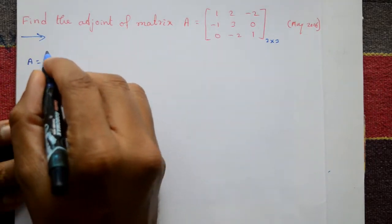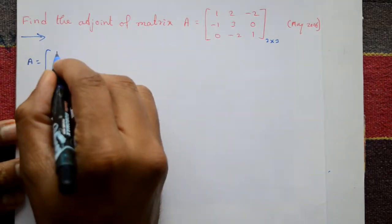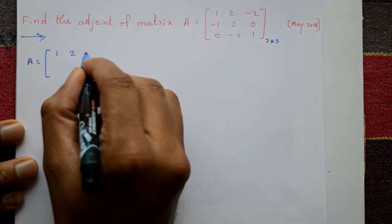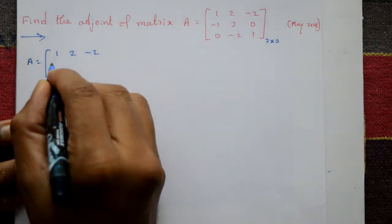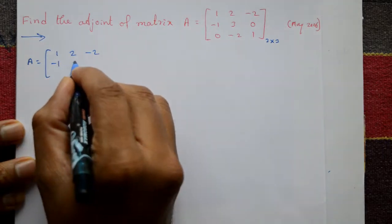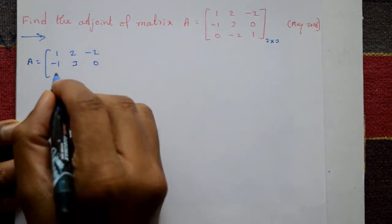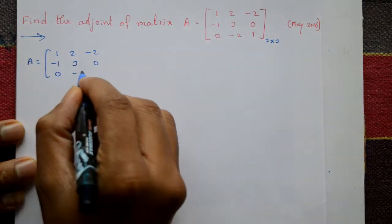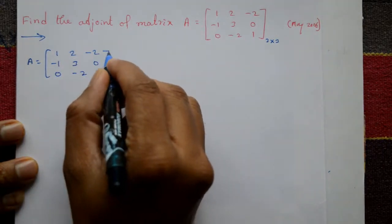Matrix A is given: 1, 2, minus 2, minus 1, 3, 0, 0, minus 2, 1.